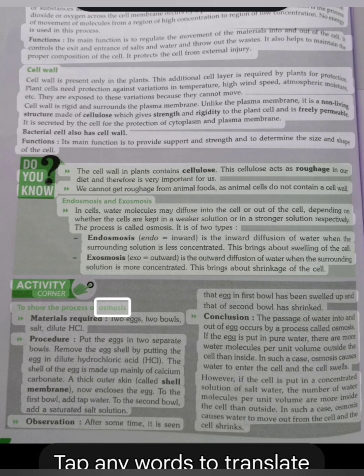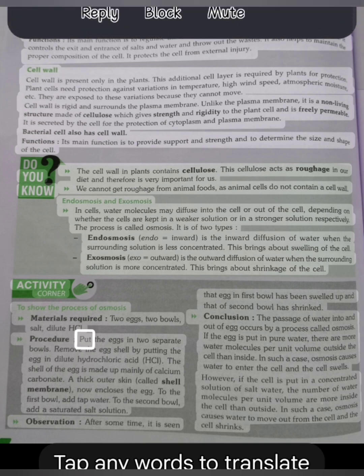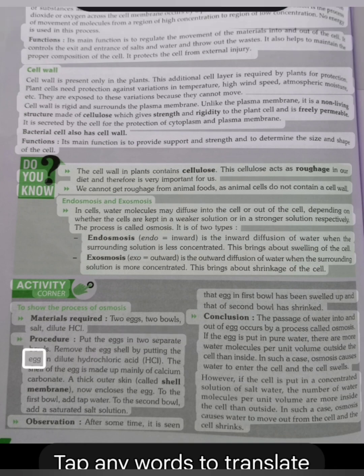Activity corner: To show the process of osmosis. Materials required: Two eggs, two bowls, salt, dilute HCl. Procedure: Put the eggs in two separate bowls. Remove the egg shell by putting the egg in dilute hydrochloric acid (HCl). The shell of the egg is made up mainly of calcium carbonate. A thick outer skin, called shell membrane, now encloses the egg. To the first bowl, add tap water. To the second bowl, add a saturated salt solution.